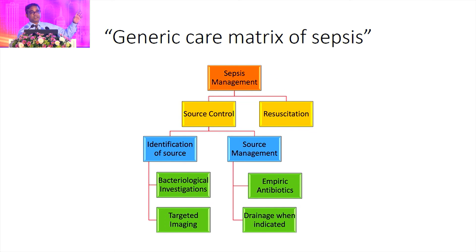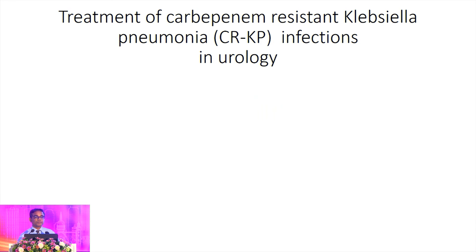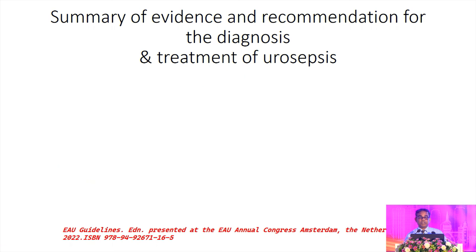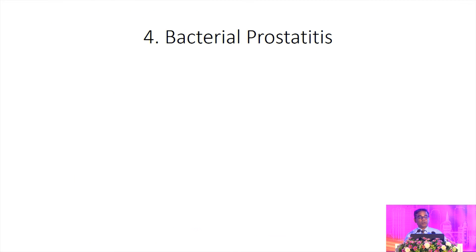This is the sepsis management protocol — you can see two arms: one is resuscitation with intensive support, and the other is source control. Source control has two arms: identification of the source, which requires investigations and imaging, and then source management, which includes source control plus empiric antimicrobials. Treatment of carbapenem-resistant Klebsiella pneumoniae is an emerging situation in our hospitals, where you need colistin with carbapenem, or colistin with tigecycline if you are suspecting carbapenem-resistant organisms. Infection prevention plays a major role, and all these recommendations have a strong evidence base according to the guidelines.